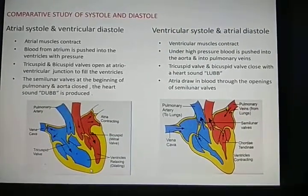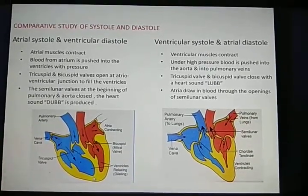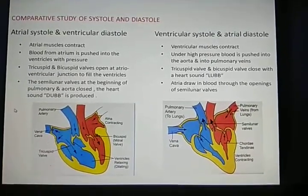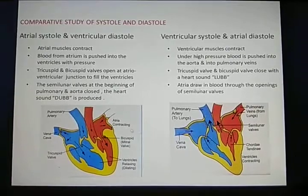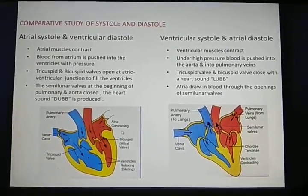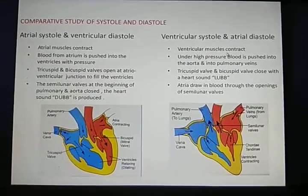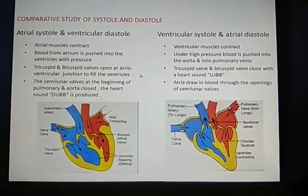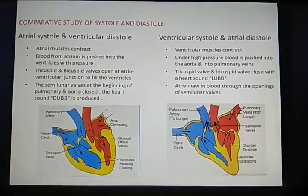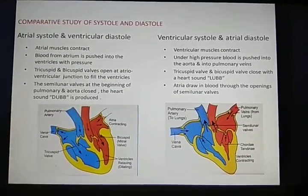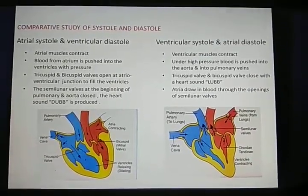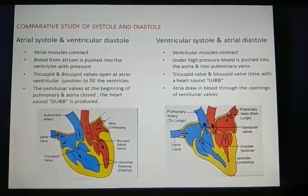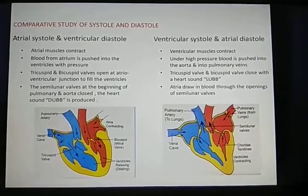Systole and diastole occur in two types: joint and single. In arterial systole it takes around 0.1 seconds. In ventricular systole it takes 0.3 seconds. Both jointly take 0.4 seconds, while ventricular diastole takes 0.5 seconds. The total cardiac cycle takes only 0.8 seconds to complete one cycle — meaning blood is oxygenated, travels from all parts of the body to the heart, goes back to all parts, is purified, and continues. This is all about systole and diastole.